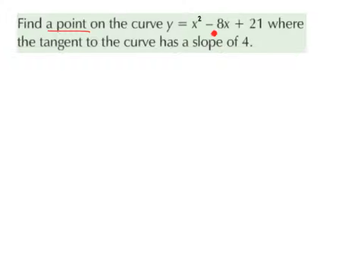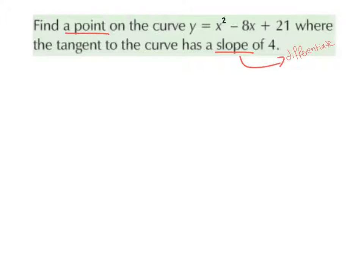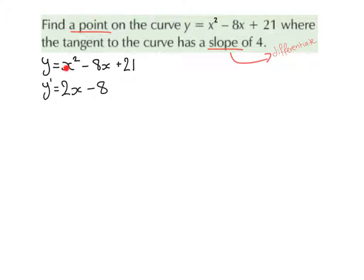If we want to find a slope of a tangent to the curve, we need to differentiate the function, which is y equals x squared minus 8x plus 21. So we're going to differentiate our function. y equals x squared minus 8x plus 21, and the derivative of that is going to be 2x minus 8.